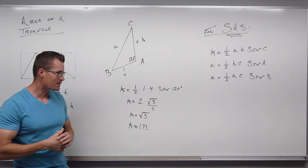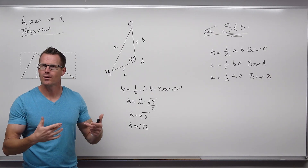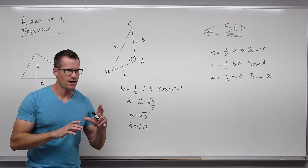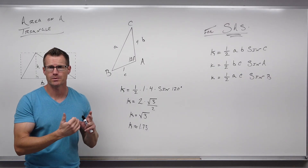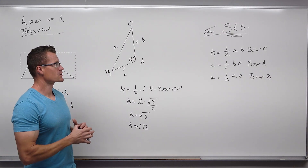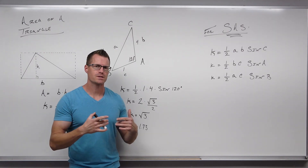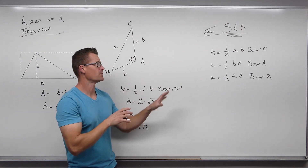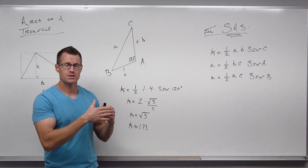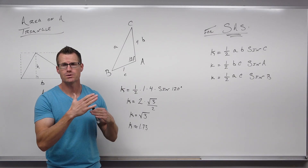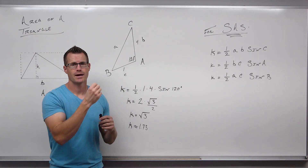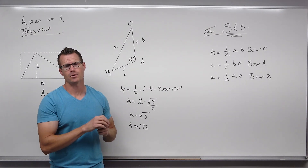That leaves us with the square root of three, or about 1.73 if you want to approximate. The area of the triangle is about 1.73 square units. If you know two sides and the angle between, it's not that bad — just multiply the sides times one half times sine of the angle between them.